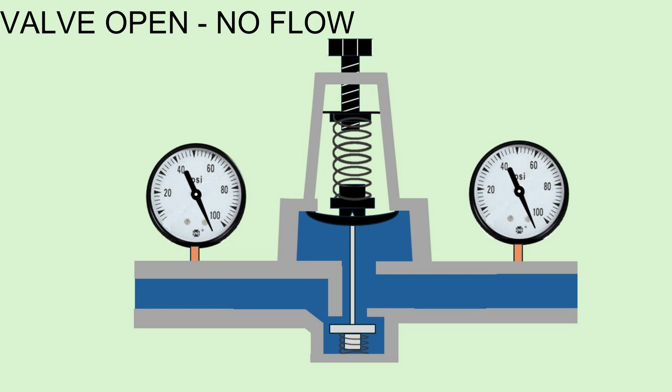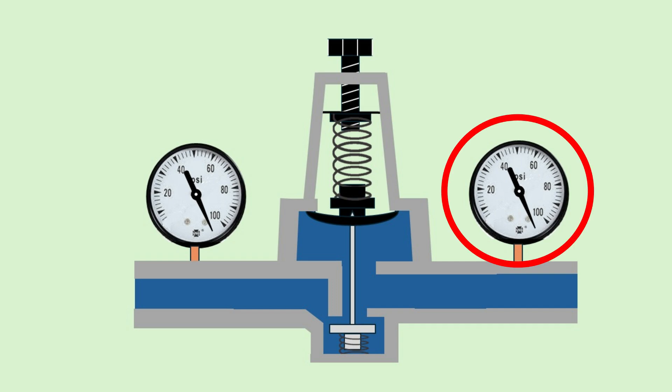This shows what would happen if there is no flow, but if the valve remained open. If this were the case in reality, then the water pressure in the home would be the same as on the inlet side of the PRV, because with no flow, there is no pressure drop across that gap.